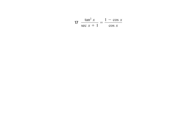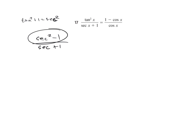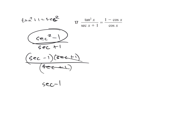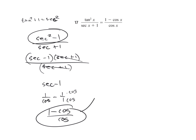Now we have tangent squared over secant plus 1. Tangent squared plus 1 is secant squared, so tangent squared is secant squared minus 1. We have secant plus 1 on the bottom. This is the difference of squares: secant minus 1 times secant plus 1. With secant plus 1 on the bottom, those reduce out, leaving secant minus 1. Secant is 1 over cosine minus 1 — get a common denominator, giving 1 minus cosine all over cosine, which matches.